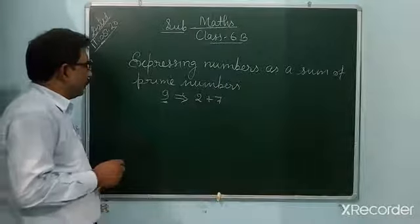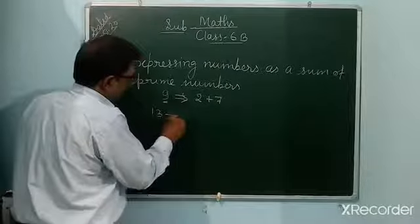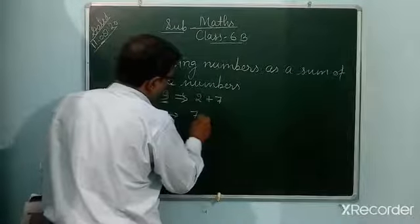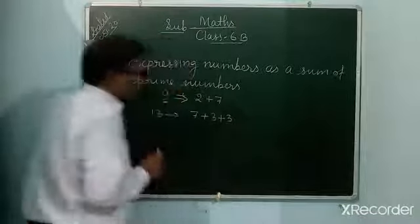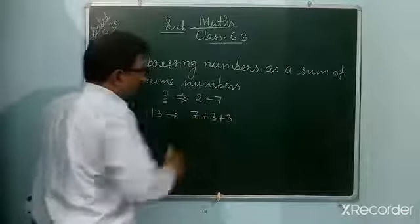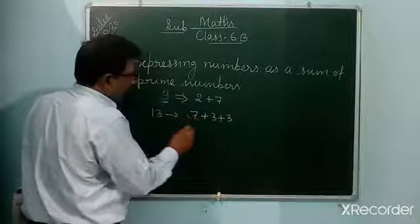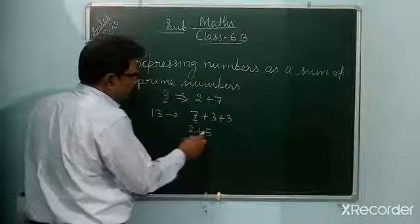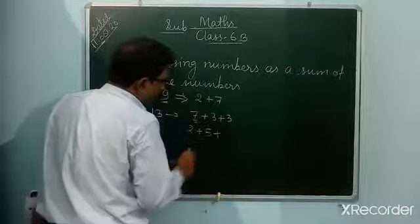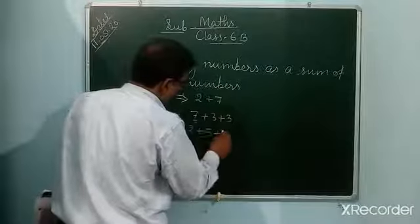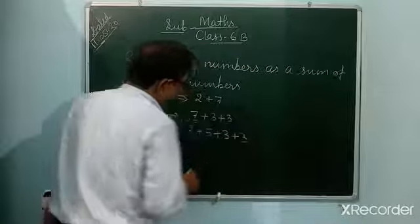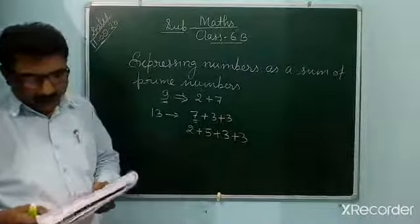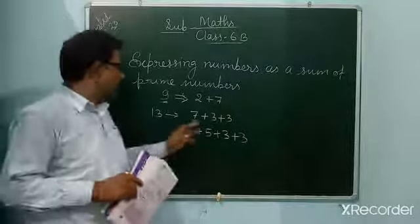Next, if the number given is 13, you can write 7 plus 3 plus 3. If you want to break 7 further, you can write it as 2 plus 5. So 13 can also be written as 2 plus 5 plus 3 plus 3. This can be written, but 3 is repeating. The question does not say don't repeat, so you can use this representation.